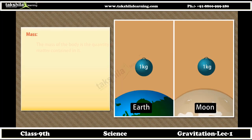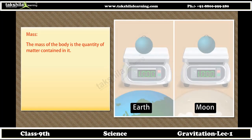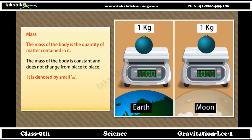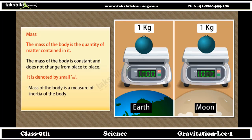Mass: the mass of the body is the quantity of matter contained in it. The mass of the body is constant and does not change from place to place. It is denoted by small m. Mass of the body is a measure of inertia of the body. Mass cannot be zero.